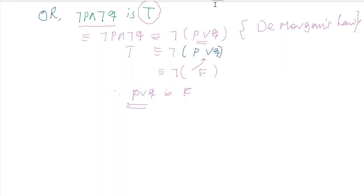In general, if negation of P and negation of Q is true, then P or Q is false. I recommend doing parts D and E of question number five the same way. Thank you for watching.